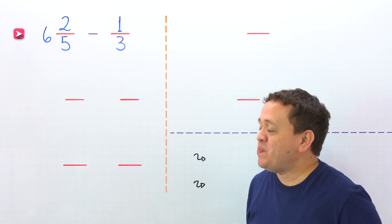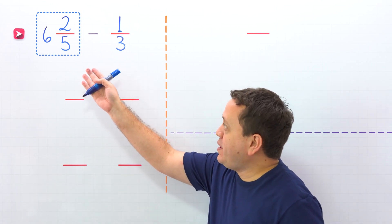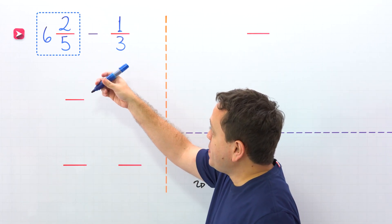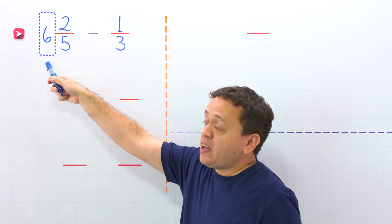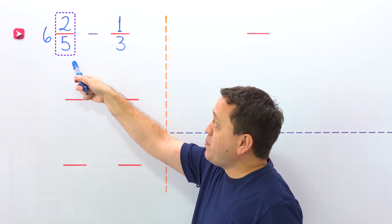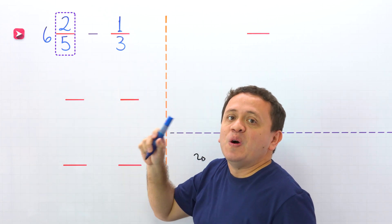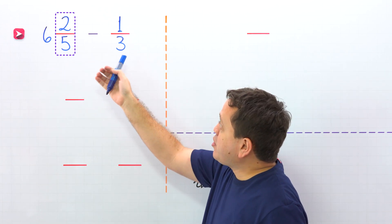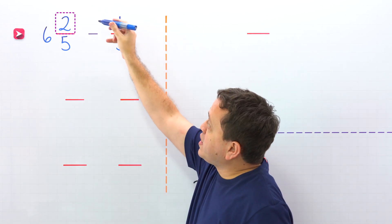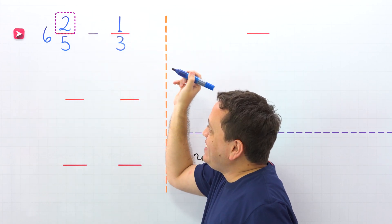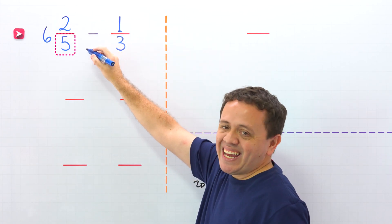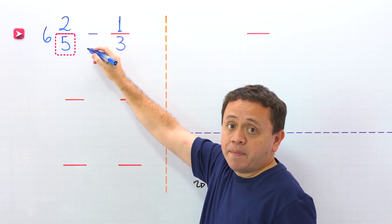Let's start with a quick review. A mixed number, like this one, is the sum of a whole number and a proper fraction. Also, a proper fraction is a fraction where the numerator, the top number, is less than the denominator, the bottom number.